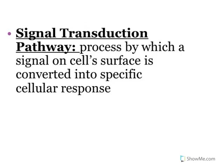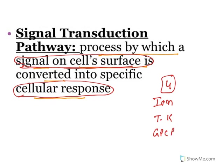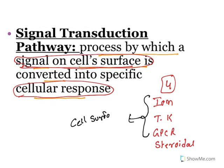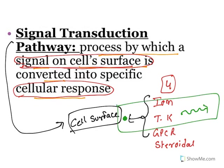The process of signal transduction is the process by which a signal on the cell surface is converted into a specific cellular response. There are four major types of receptors: ion channel receptors, tyrosine kinase receptors, G-protein coupled receptors, and steroidal receptors. Steroidal receptors are also known as intracellular receptors. Out of these four, three receptors are present on the cell surface — that is, on the cell membrane.